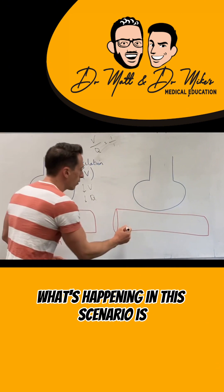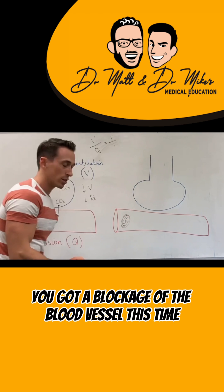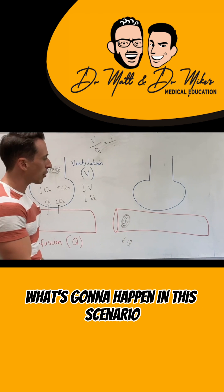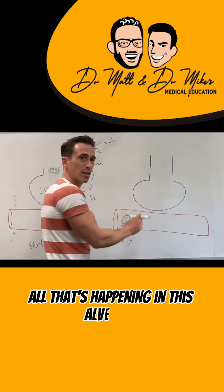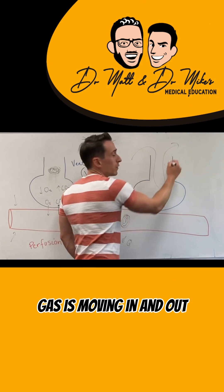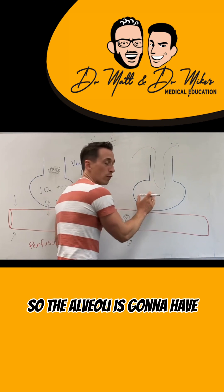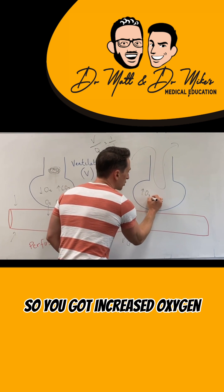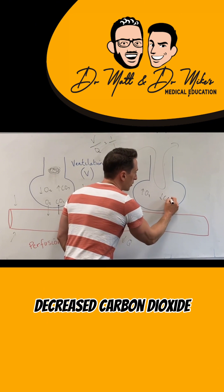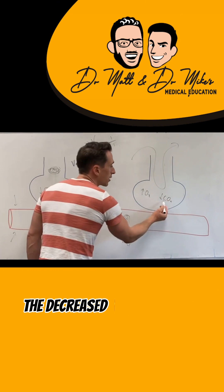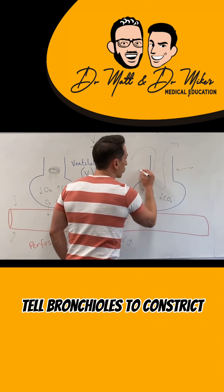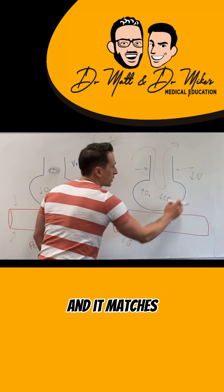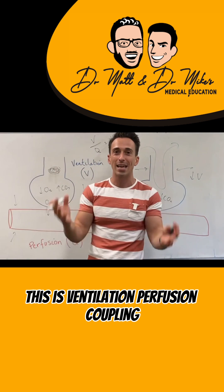In this scenario, there's a blockage of the blood vessel, so perfusion has dropped. Gases can't effectively exchange, and all that's happening in the alveoli is gases moving in and out, so the alveoli will have the same concentration of gases as the atmosphere — increased oxygen and decreased carbon dioxide. Interestingly, the decreased carbon dioxide tells the bronchioles to constrict, resulting in a drop in ventilation — and it matches. This is ventilation-perfusion coupling.